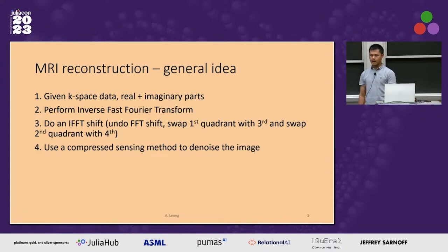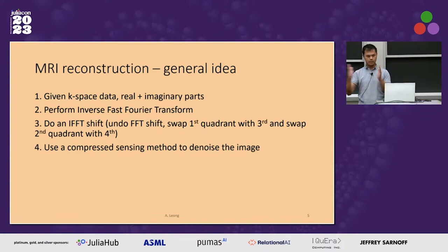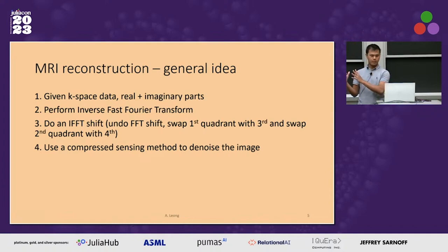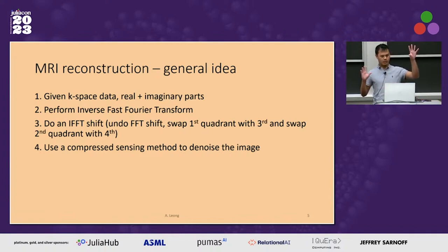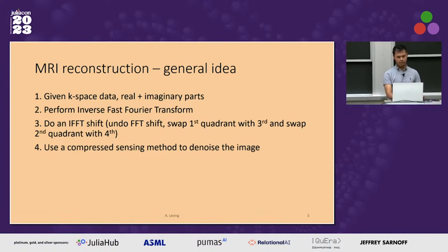MRI reconstruction: the general idea is if you've got some dataset — I've used the NYU FastMRI dataset here. It's read in as an H5 file. It's basically k-space data. You get real and imaginary parts, and it's three-dimensional because there are a bunch of slices. I just take one slice of that k-space, perform the inverse fast Fourier transform to convert that k-space into an image. Then I do an IFFT shift, which takes the first quadrant and swaps it with the third quadrant, and the second quadrant with the fourth quadrant to reconstruct the image.